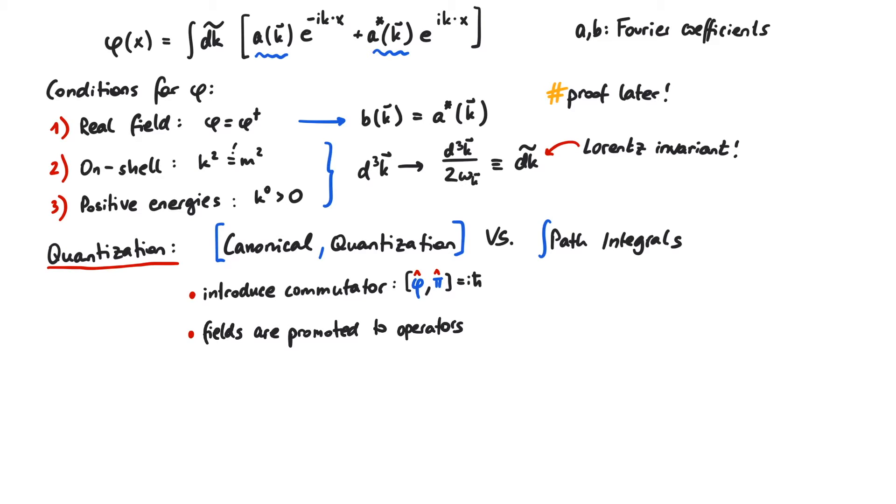During this process we say that phi gets promoted to an operator. The second approach, path integrals, skips the definitions of operators and directly enables us to compute scattering amplitudes. Since path integrals deserve a video on their own, we will continue with canonical quantization. The step from the classical theory to the quantum theory is the usage of this commutator.